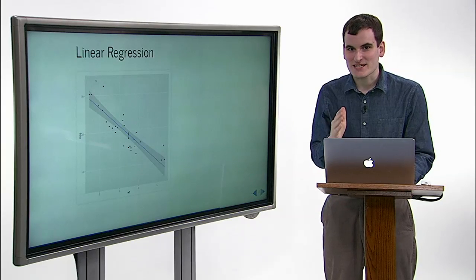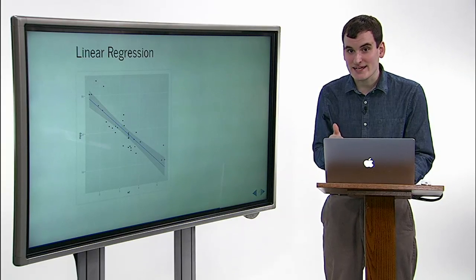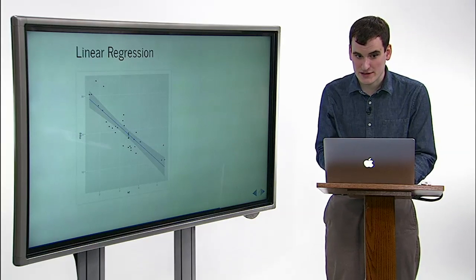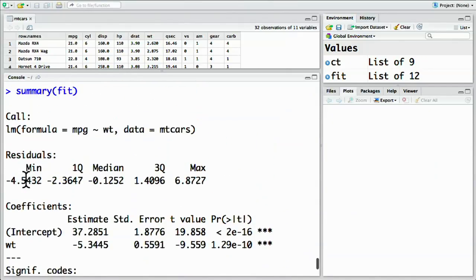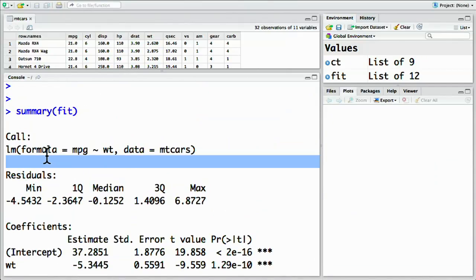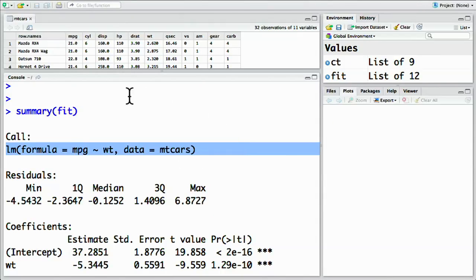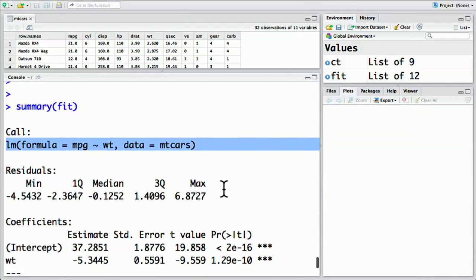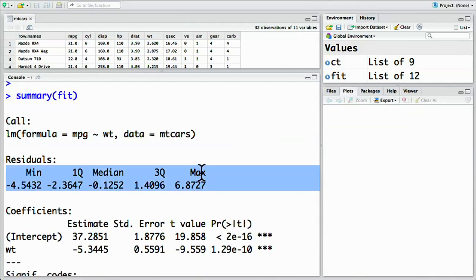This output contains a ton of information, even more than the t-test or correlation test did. Let's look at a few parts of it. Briefly, this first part shows the call. That's the way that the function was called, miles per gallon explained by weight using the mtcars data. This summarizes the residuals. That's how much the model got each of those predictions wrong, how different the predictions were than the actual results.